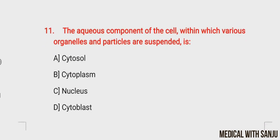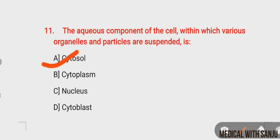Question number eleven: the aqueous component of the cell within which various organelles and particles are suspended is — option A: cytosol, option B: cytoplasm, option C: nucleus, option D: cytoplast. The right answer is option A, cytosol. Cytoplasm refers to all components between the nucleus and the cell membrane. Cytosol is the fluid portion, an aqueous solution of ions and nutrients. Cytoplasm includes cytosol and the organelles, such as mitochondria.